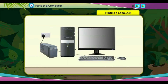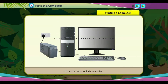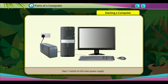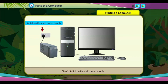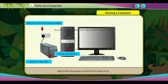Starting a computer: a computer runs on electricity so it needs to be switched on. Step one: switch on the main power supply. Step two: press the UPS button to switch it on. Step three: press the button on the CPU.